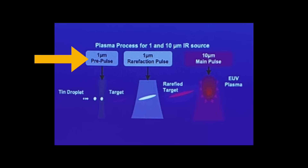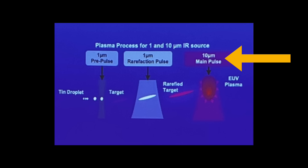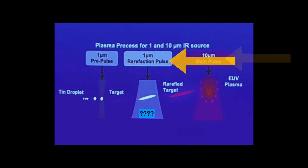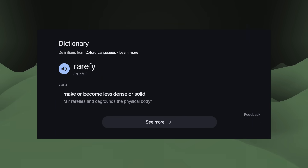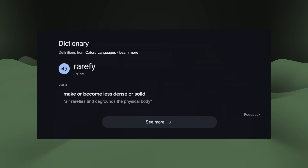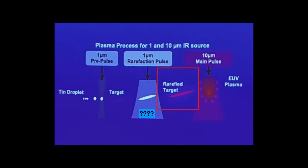The slide that ASML showed names the three pulses in its new EUV sequence. Two of those we already discussed: first, there's the pre-pulse, which flattens and expands the liquid tin droplet. At the end we have the third — the main pulse — the powerful 10-micrometer CO2 pulse that irradiates the target and produces the plasma and finally, EUV light. But what is this middle pulse? ASML calls this the rarefaction pulse. To rarefy something means to reduce its density, so the goal of this pulse is to rarefy the tin disk, significantly lowering its density in preparation for the main pulse.